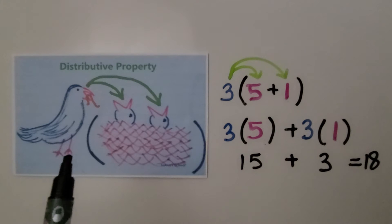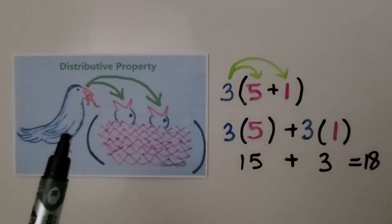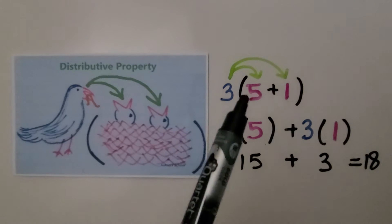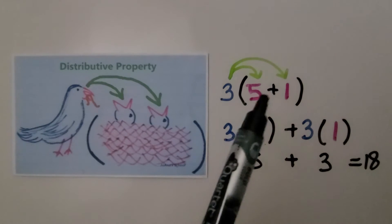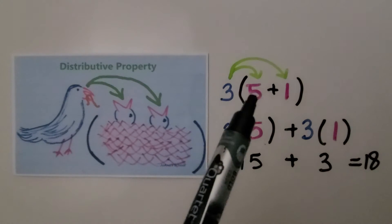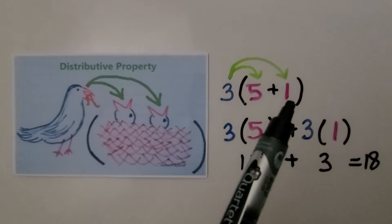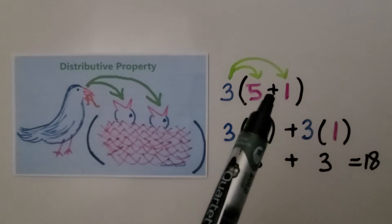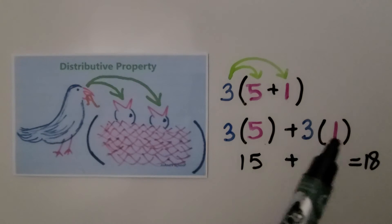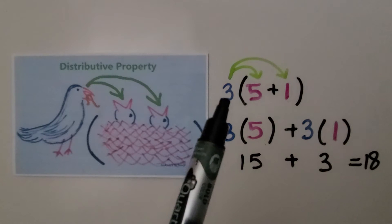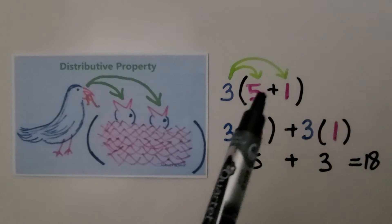I've used this picture in some of my other videos — it represents the distributive property. The mother bird on the outside takes turns feeding the baby birds inside the parentheses nest. So the mother bird is the number on the outside, and the addends are the baby birds. We do 3 times 5 plus 3 times 1: 3 times 5 is 15, plus 3 times 1 is 3, and 15 plus 3 equals 18. That's the same as 3 times 6, which is 18.